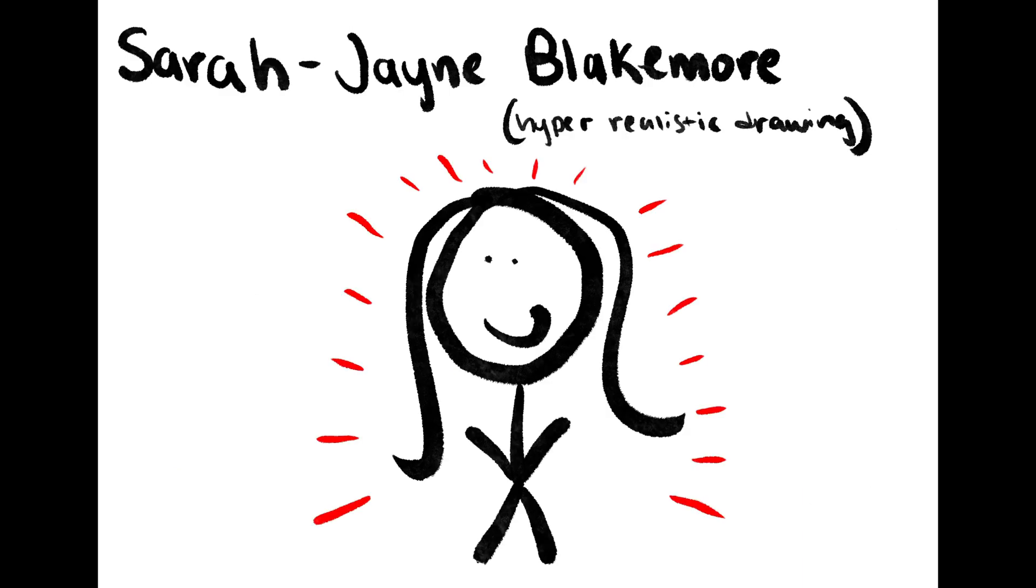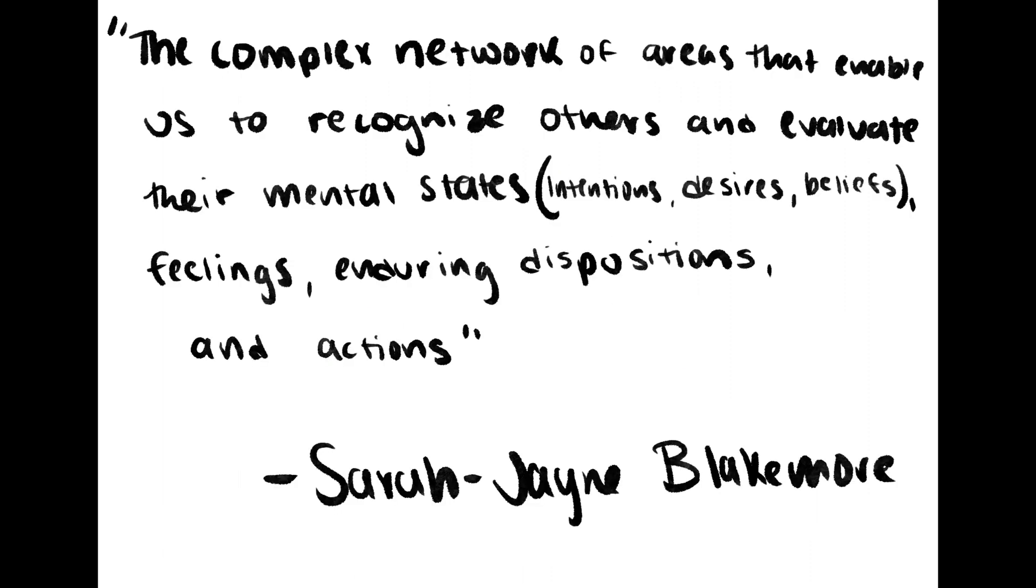Sarah Jane Blakemore, a prominent researcher in the social neuroscience field, particularly with adolescence, defines the social brain as the complex network of areas that enable us to recognize others and evaluate their mental states, intentions, desires, and beliefs, feelings, enduring dispositions, and actions.